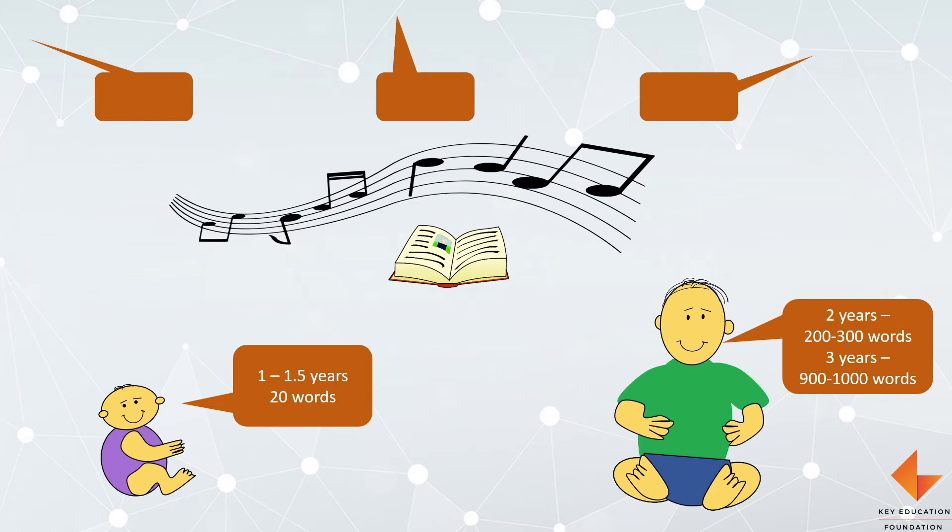This rapidly increases to 200 to 300 words by the time children are 2 years old and then 900 to 1000 words when they are 3 years old. All this talking and singing and stories that we tell children helps in building their speaking skills.